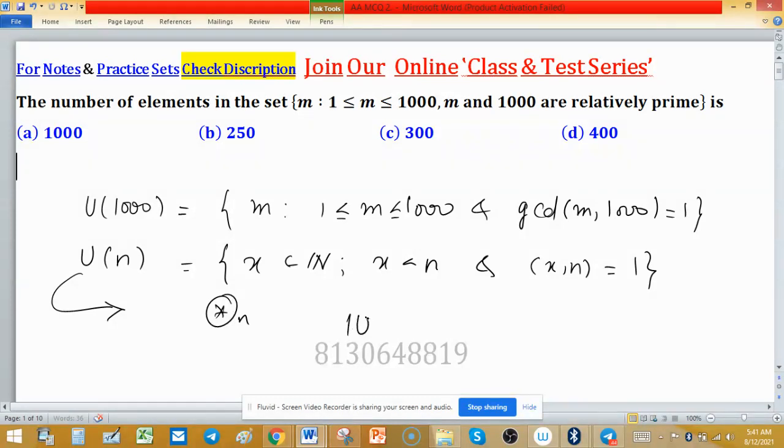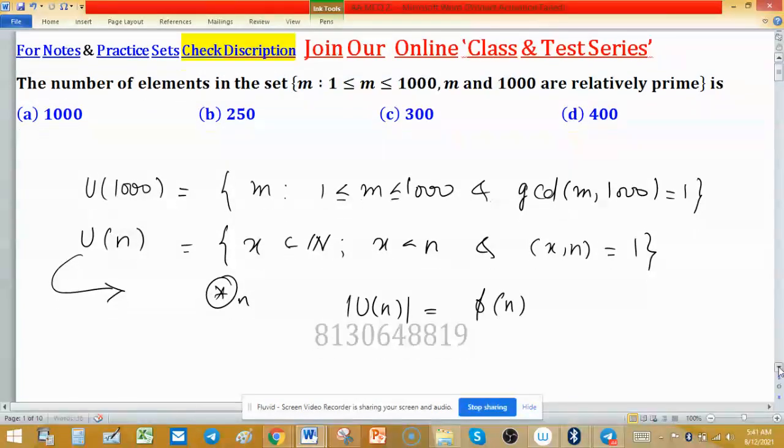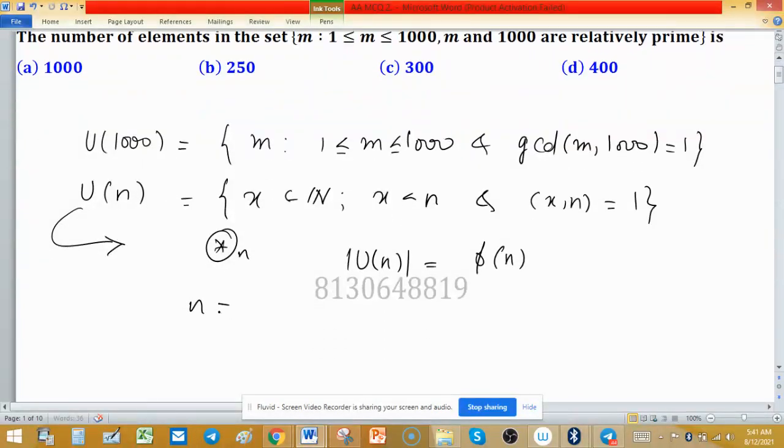So indirectly this question asks about the order of U(n), and we can find this easily with the help of Euler's phi function. How to use phi? First, write n as a prime factorization.